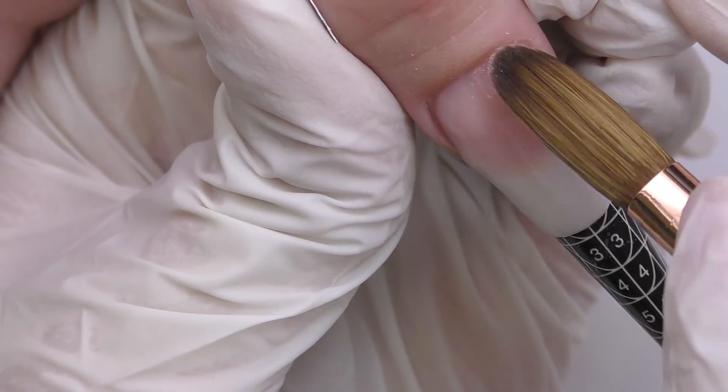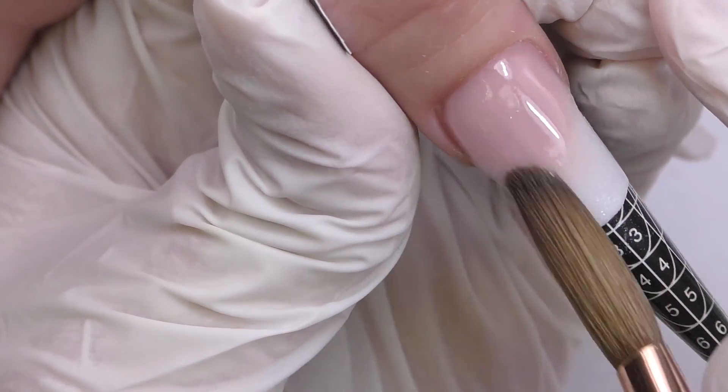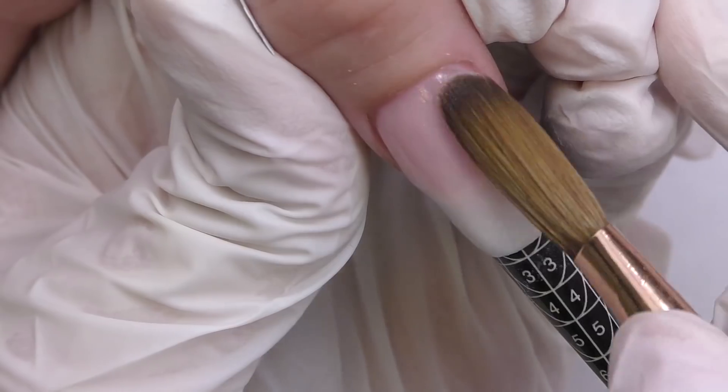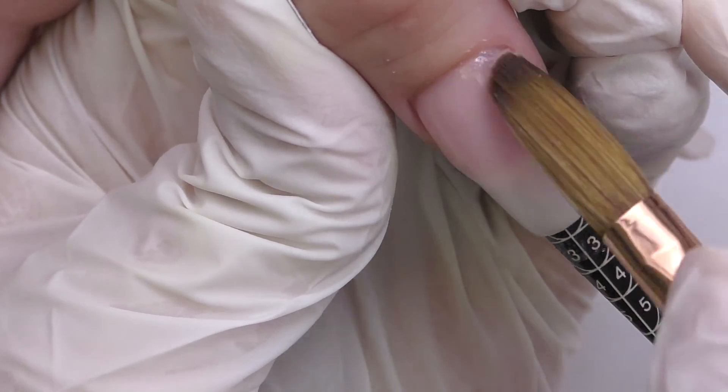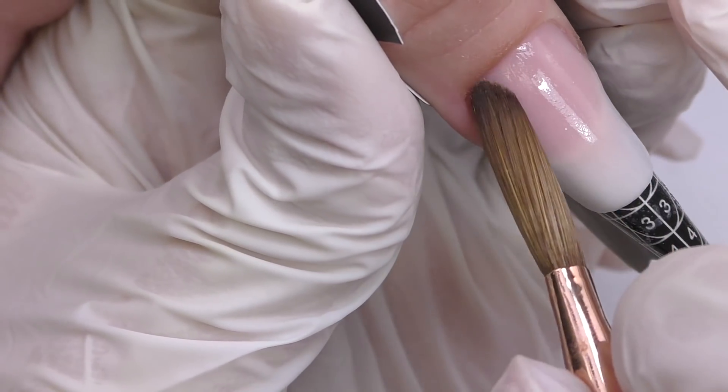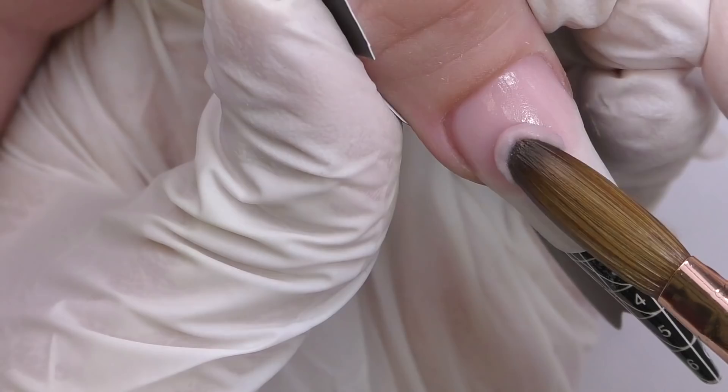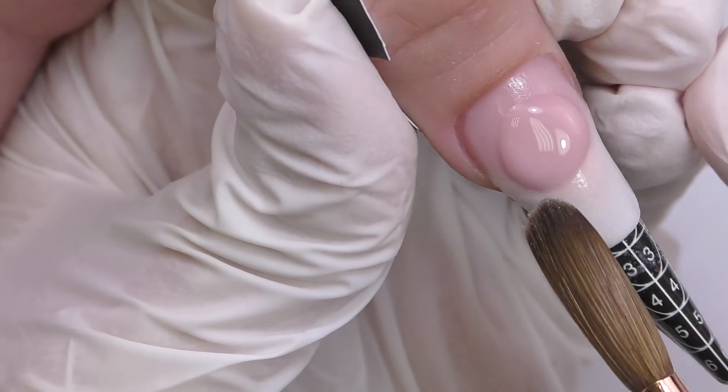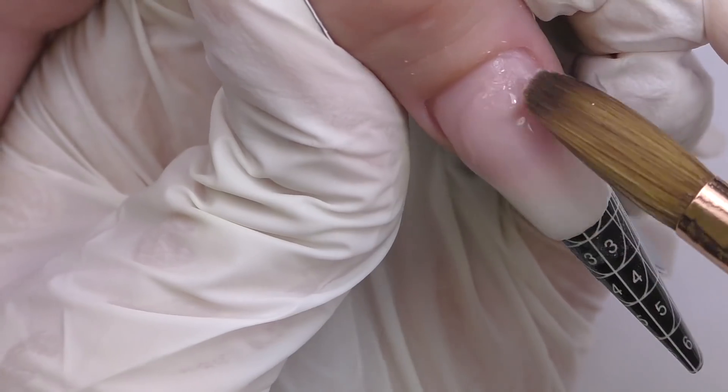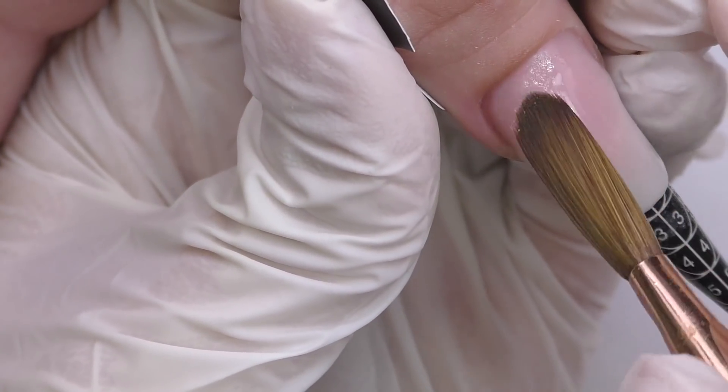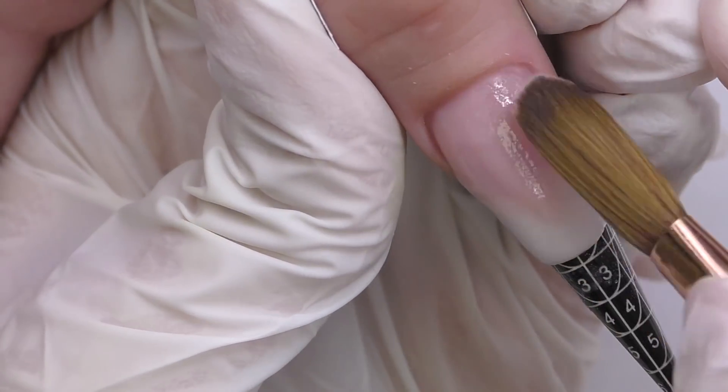I apply it near the cuticle and blend it towards the free edge. Baby Boomer is probably one of the best ideas for the wedding because it looks classy, it will match with most outfits and it just looks elegant all the time. I didn't really like this fade that I created. So I added a bit more nude in the middle and we need more product there to build an apex anyways.